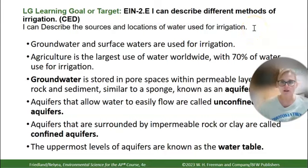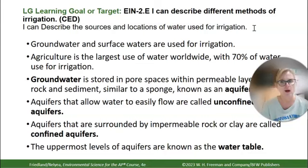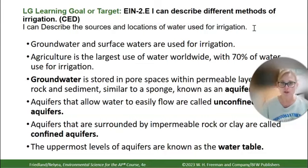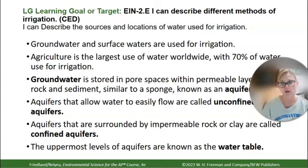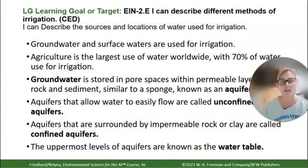Irrigation is essentially how we water lawns, planter beds, and agricultural fields. Farmers use groundwater stored in underground aquifers and surface water from rivers, streams, ponds, and lakes, pumping it for irrigation. In the world, 70% of fresh water is used for agriculture. In the United States and many developed countries, most fresh water is used for industry, though quite a lot is also used for agriculture.